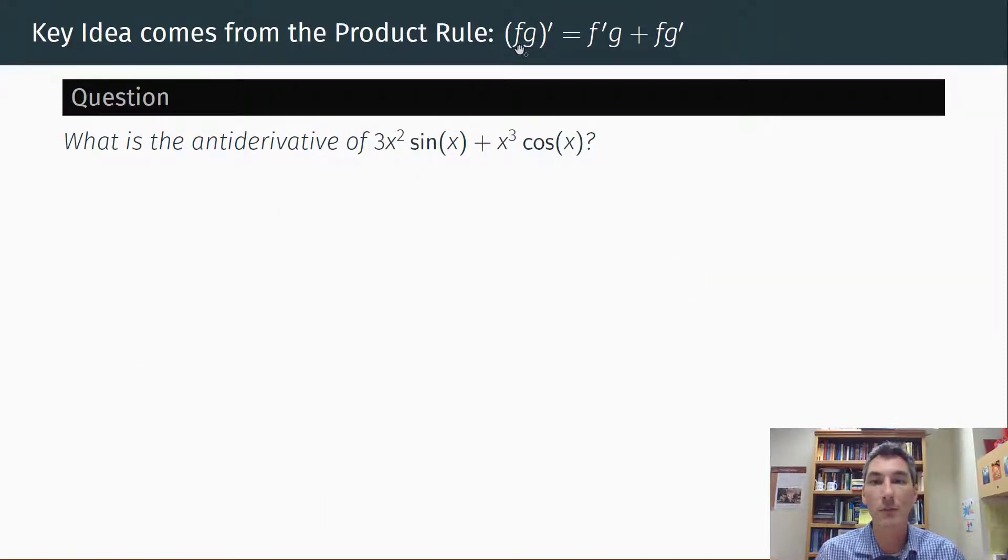And the product rule is simple. It just says if you have the product of functions and you take the derivative, the derivative of fg is f'g plus fg'. And we're going to do it backwards. So if you have something that looks like this and you integrated it, well, you would just get fg, right? Because the integral of f'g plus fg' is just fg. And so the integral of the right-hand side must be fg.